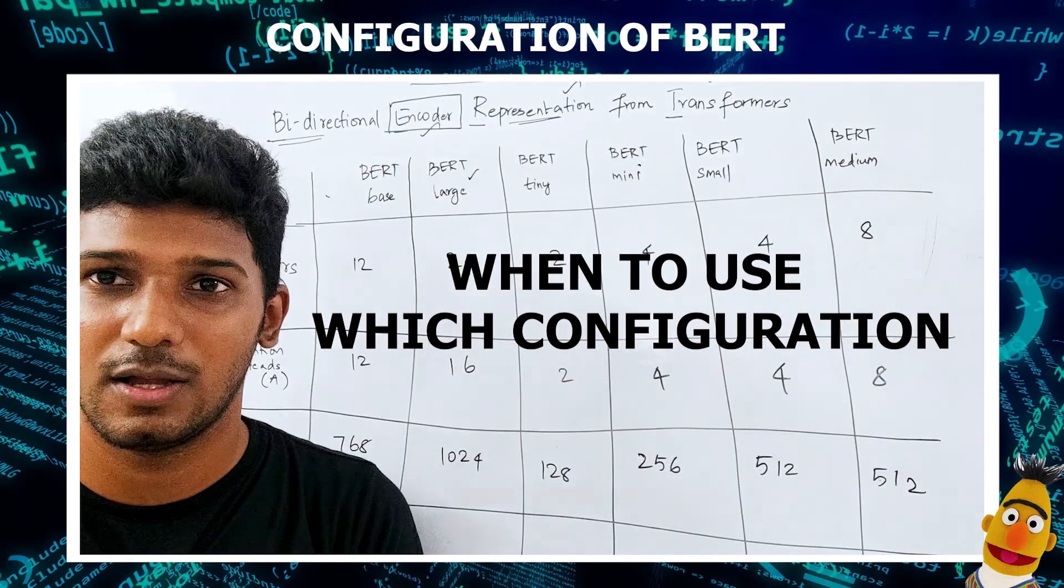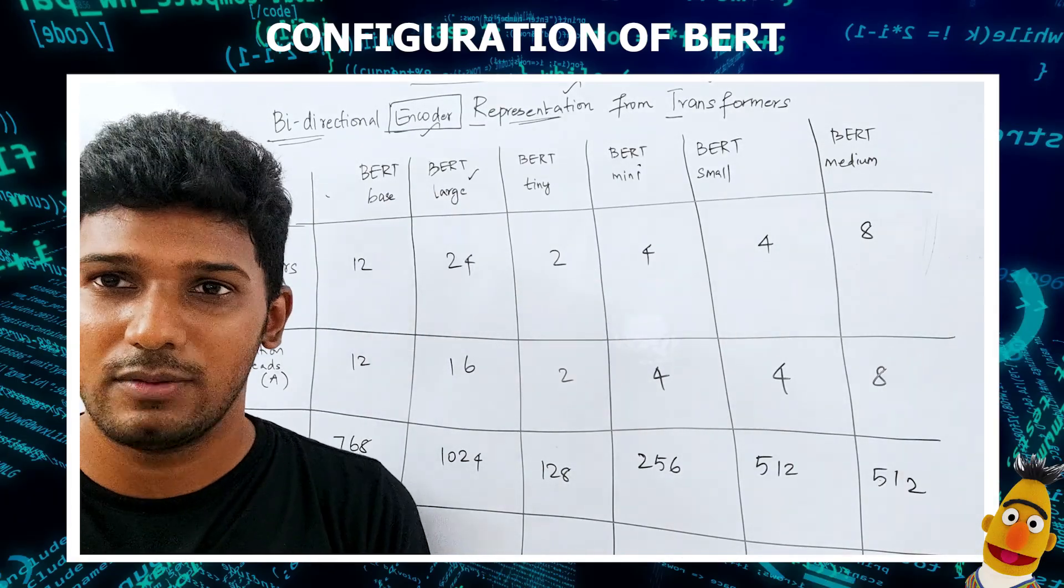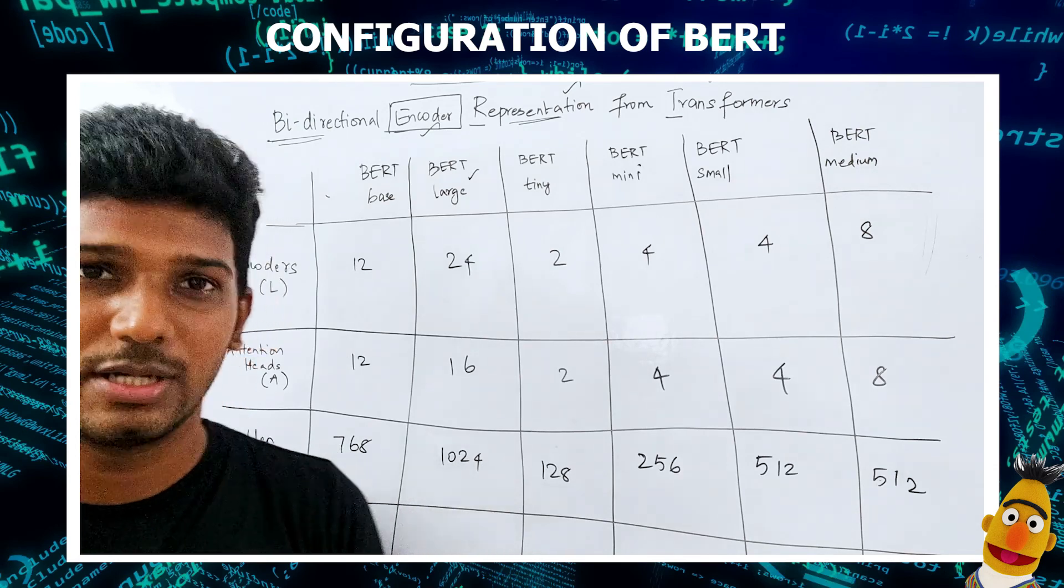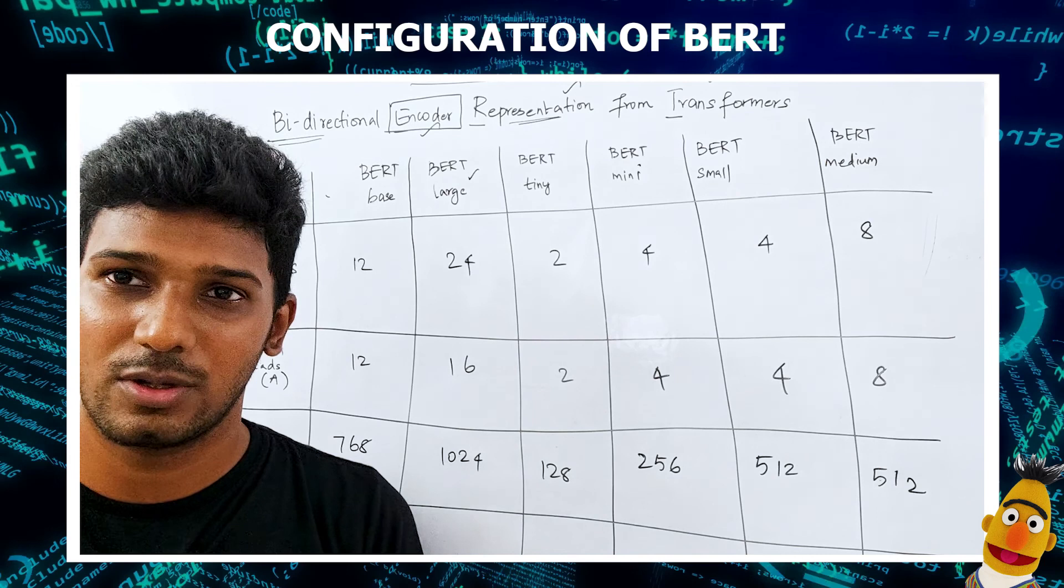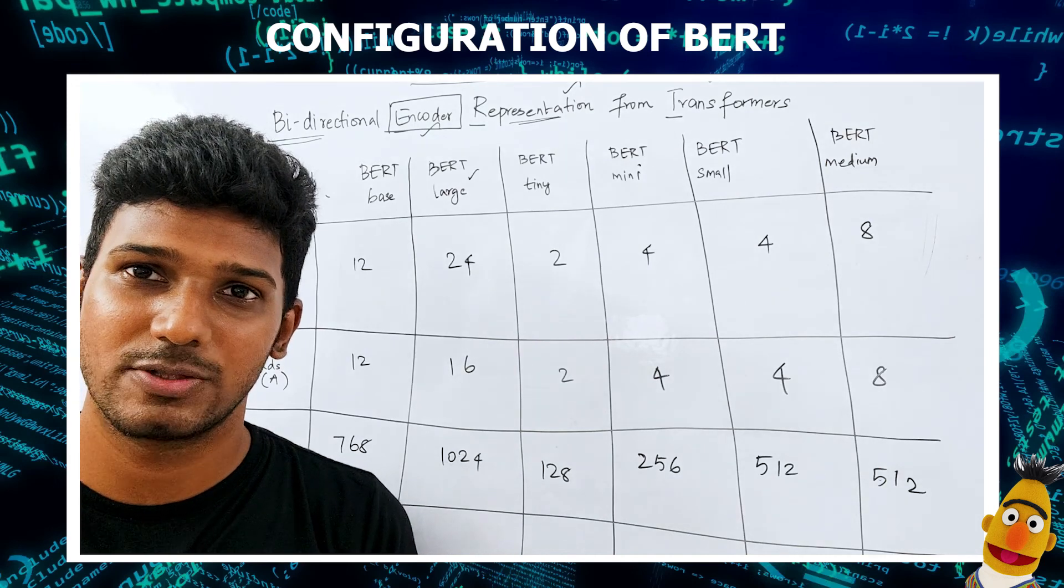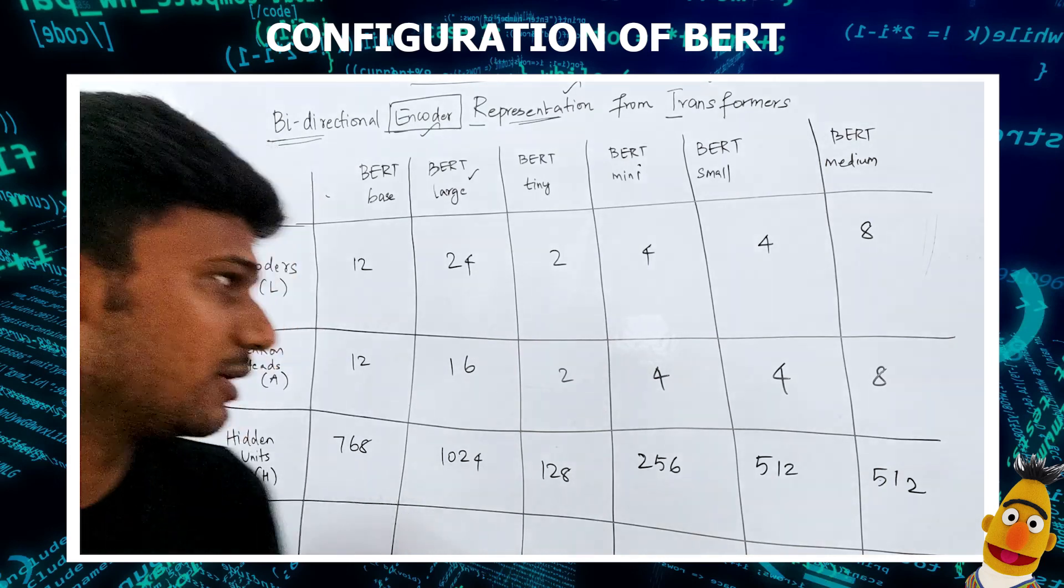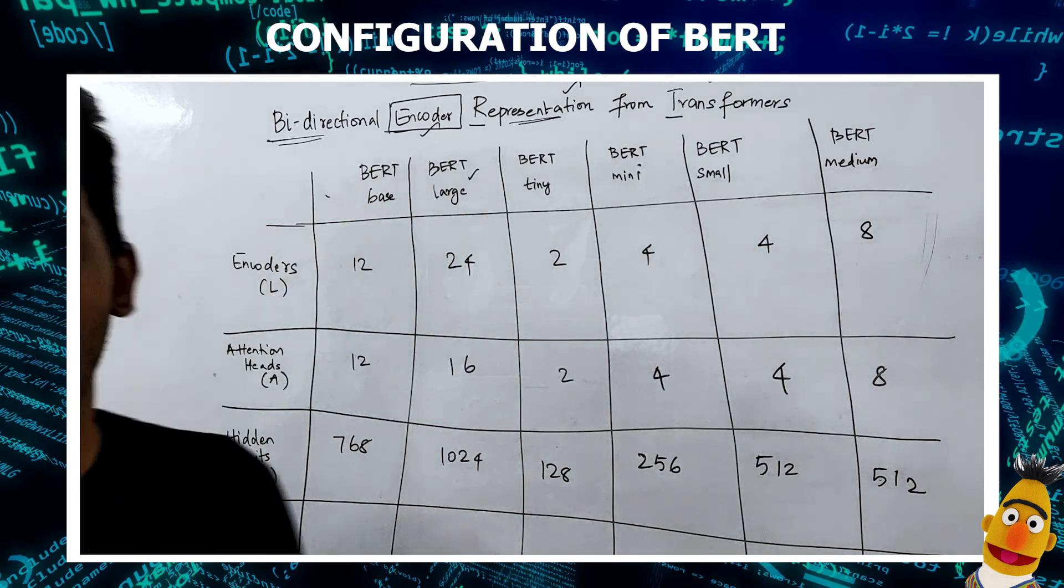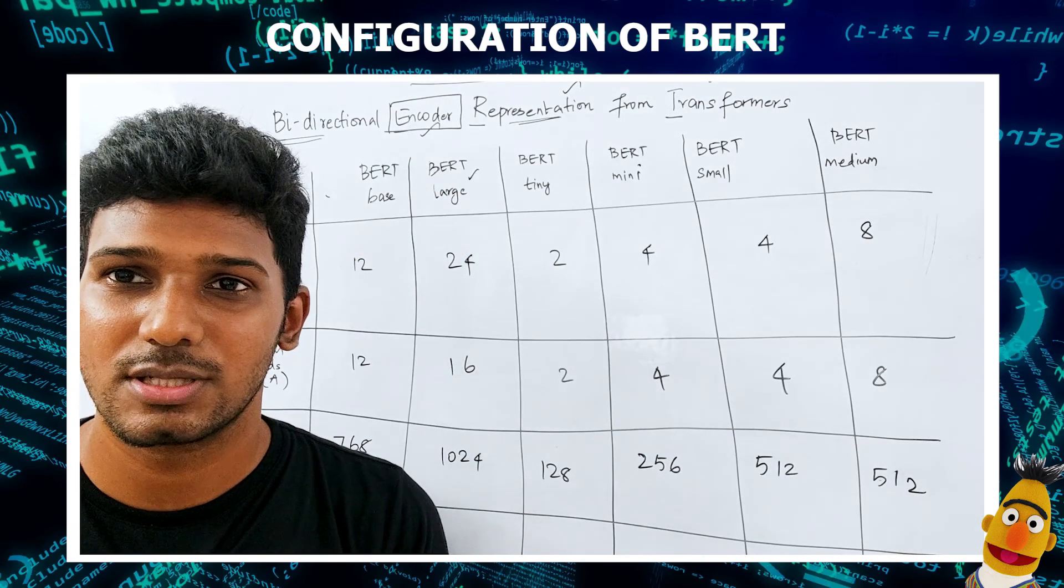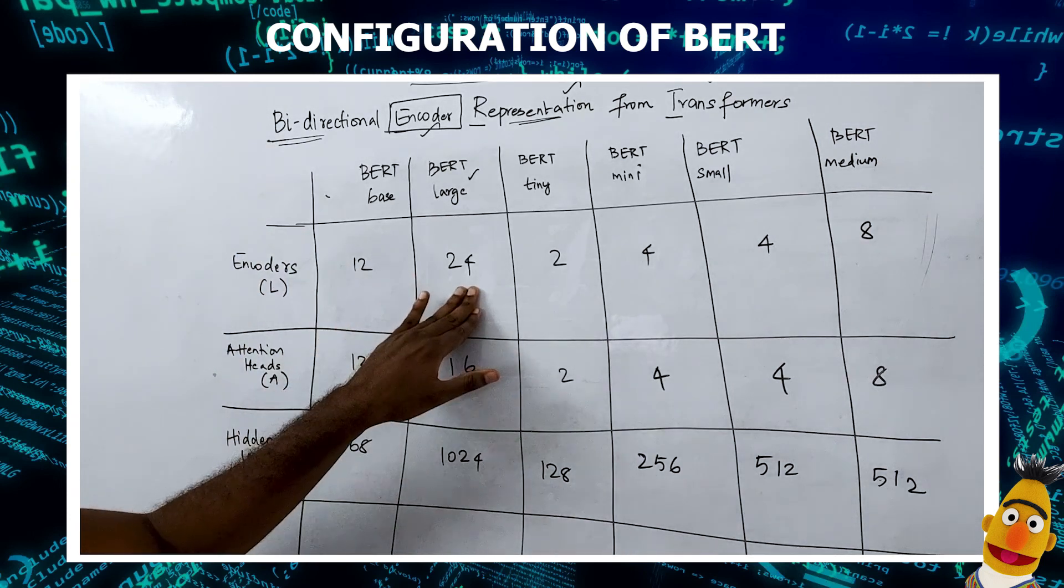When to use which configuration? If you have limited computational power, it's better to go with tiny or the other variations. But if you have good computational resources and want to achieve better results based on model complexity, you can go with BERT large or BERT base. The most commonly used BERT flavors are BERT base and BERT large.